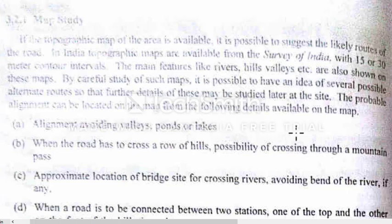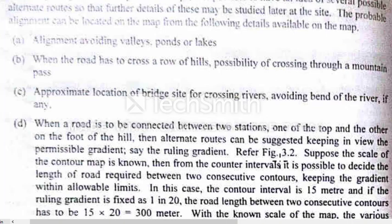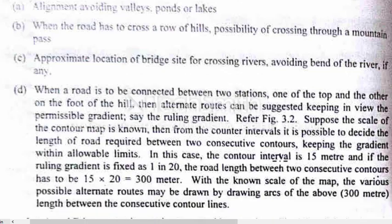First, alignment avoiding valleys, ponds, or lakes — this is very important when studying the topographical map. Second, when the road has to cross a row of hills, the possibility of crossing through a mountain pass should be considered.